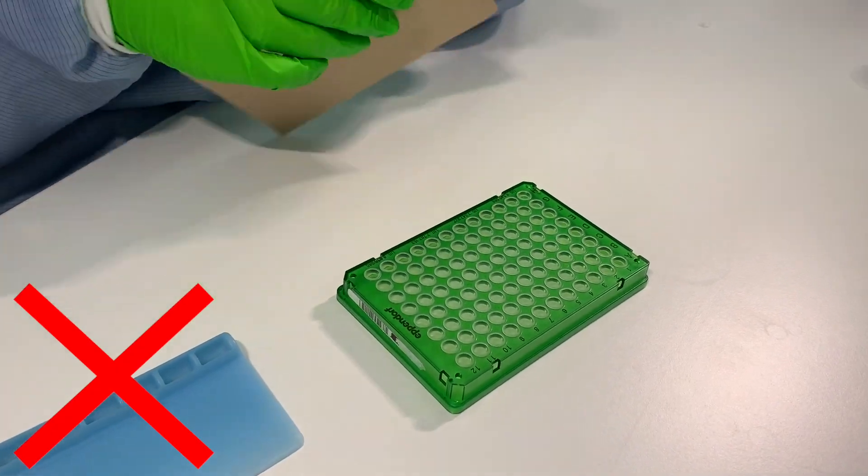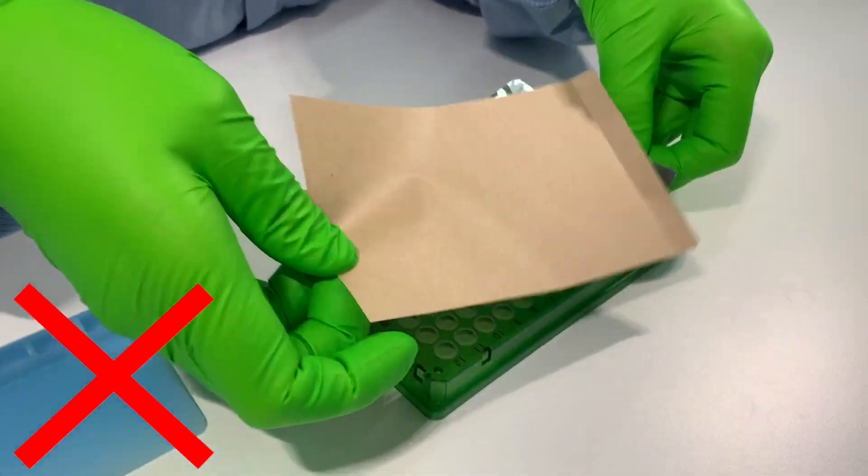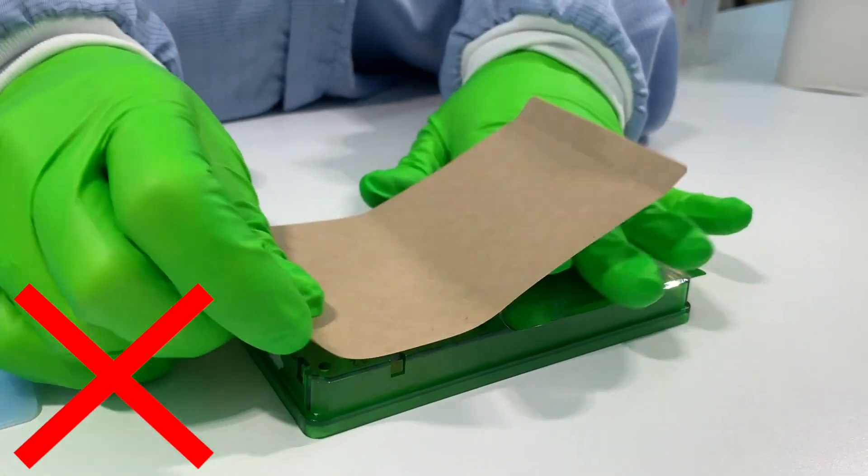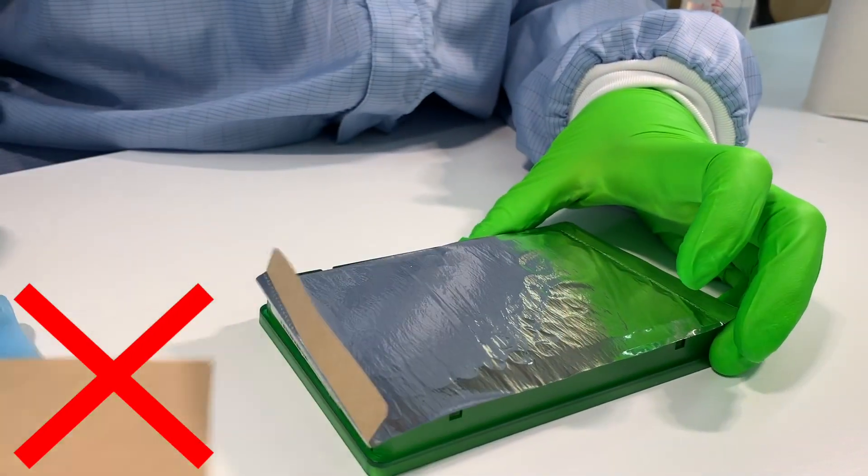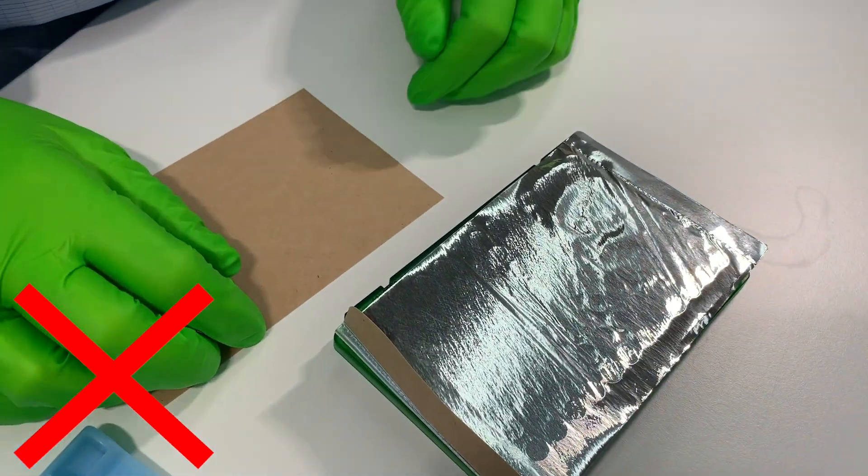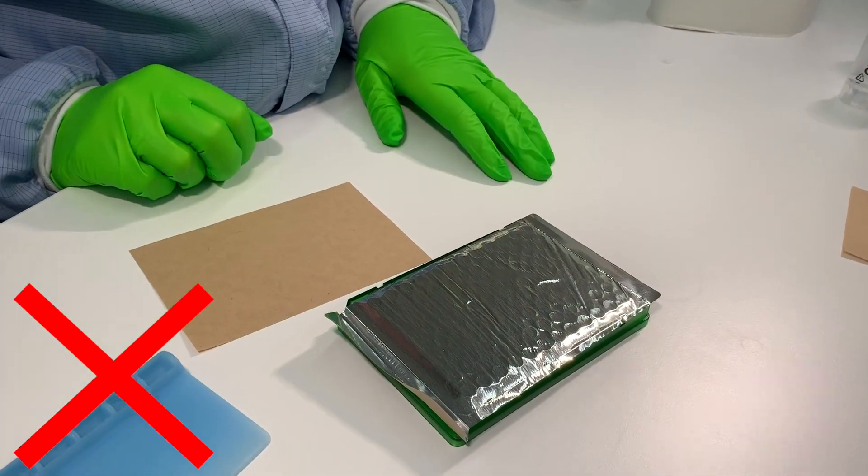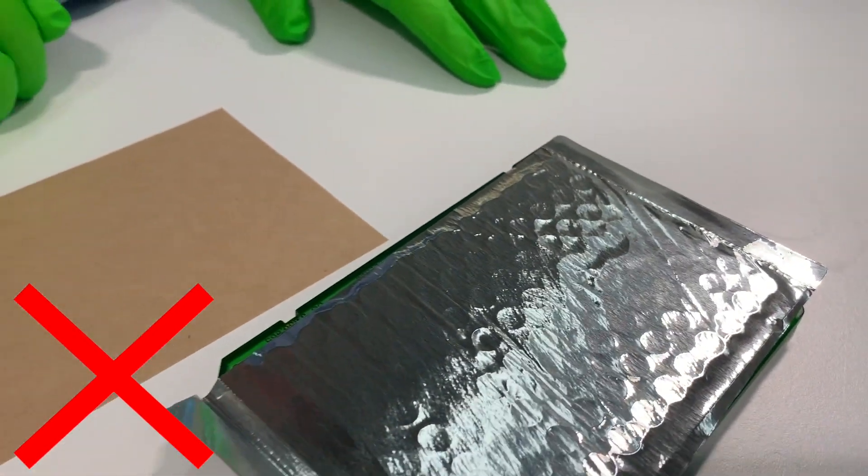Now some common mistakes when following the plate sealing instructions for the first time. In this example, the seal is placed quickly without making sure that it is oriented correctly. The seal sticks to the plate and is then removed and readjusted. This can cause cross-contamination of your samples. Finally, the seal is not pressed down properly. Consequently, you don't see individual wells and there are wrinkles in the aluminum seal.